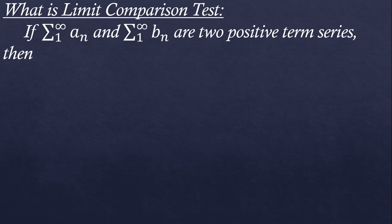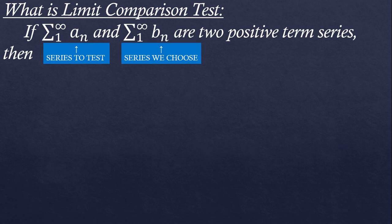When you are given a positive term series, you just need to find another series about which you are sure is convergent or divergent, and then you take their ratio like a_n divided by b_n, where a_n is the series you are given to test and b_n is the other series that you have chosen yourself.